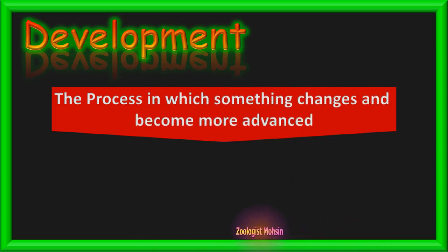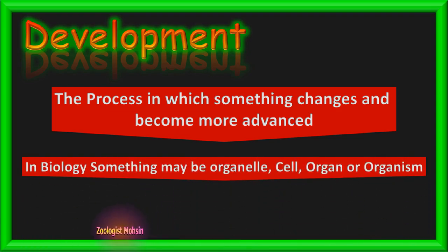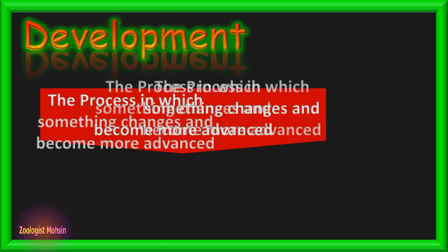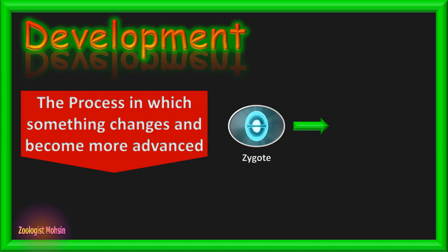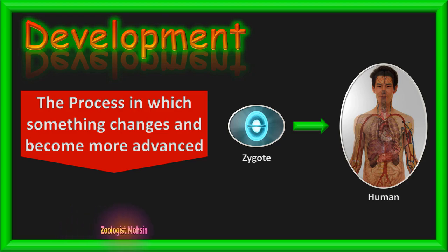Development is the process in which something changes and becomes more advanced. The word 'advanced' is the key theme word here. If something is becoming better than before — whether an organelle, a cell, an organ, or an organism — that is referred to as development. For example, a single zygote changing into an adult human is development, because at each step cells become more advanced in functionality and structure, becoming specific through division of labor.